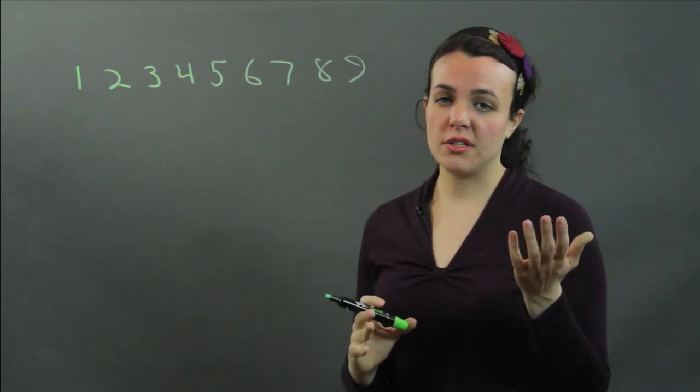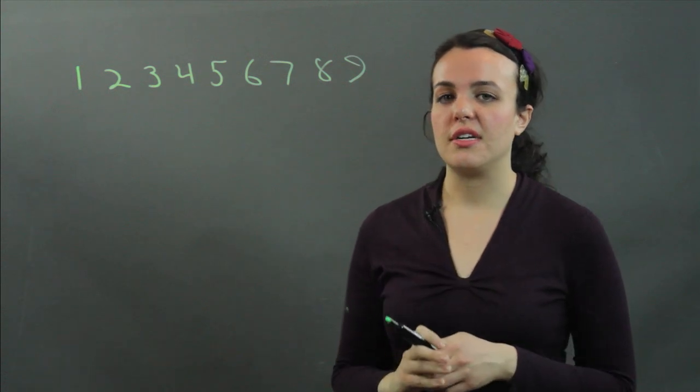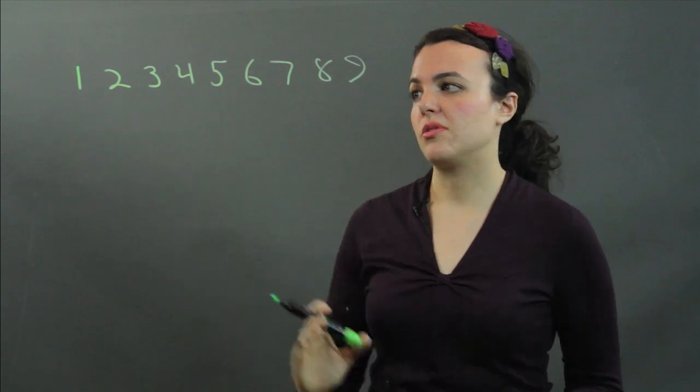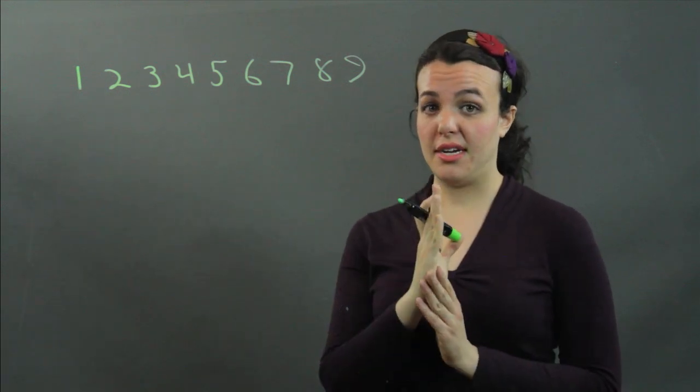So to get the lower quartile, you start with finding the median, the median of all the numbers. The median being the number in the middle.